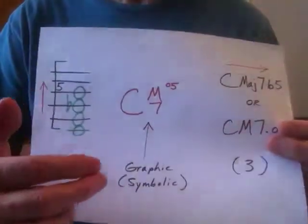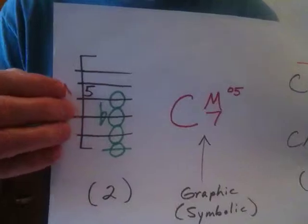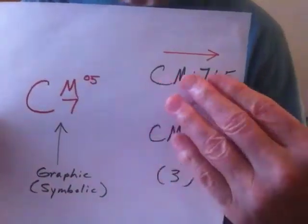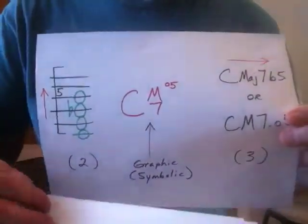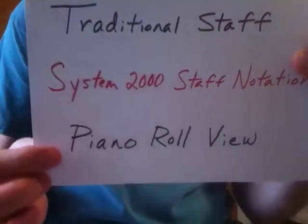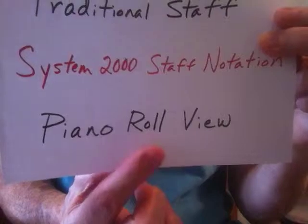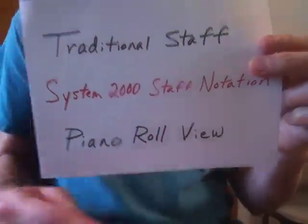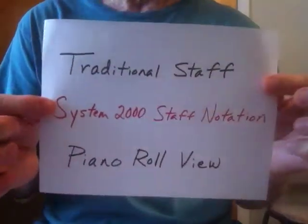Just like with my chord symbol — which was kind of in between traditional notation and linear alphanumeric notation, a kind of in-between compromise — my note symbol is also an in-between compromise: in between your traditional staff notation and the piano roll view on your music composition software. My system would fall somewhere in between because of the nature of the note symbol.